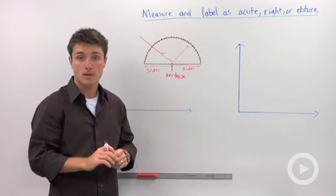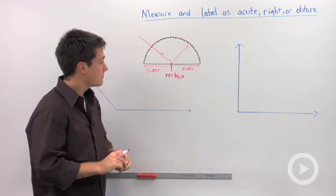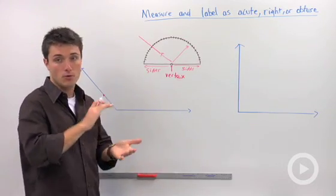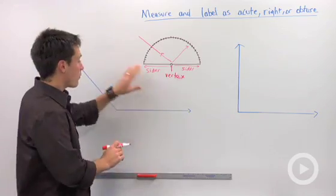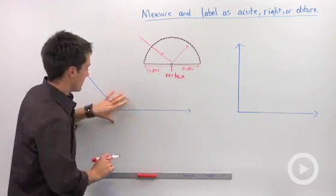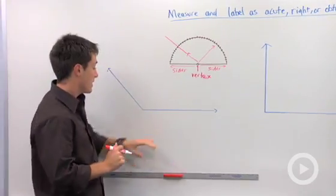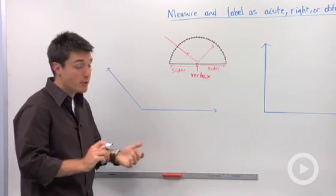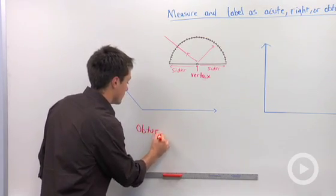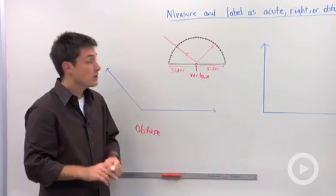Now the last key thing that you need to take in mind is obtuse, acute, or right. Before you even measure an angle, kind of eyeball it and make a guess. And if you look at this angle right here it's pretty clear that this is going to be obtuse, it's more than 90 degrees.